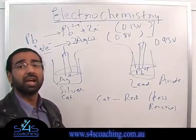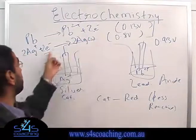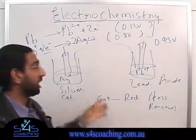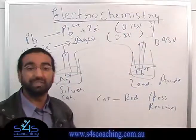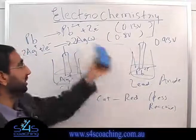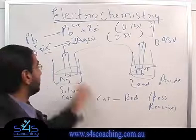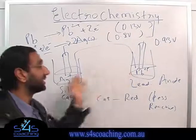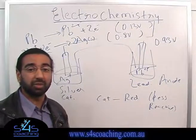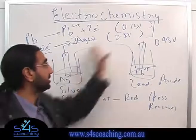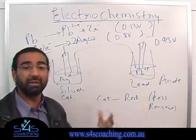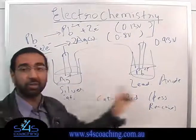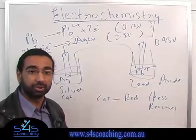A few things to remember: the half equations need to be balanced in the number of electrons. If you double a half-equation, the voltage number still remains the same. The salt bridge must be one that does not form a precipitate, because if it does, the cell will stop working. And the last thing to keep in mind is that this cell is actually an equilibrium reaction, so Le Chatelier's principle applies. If I change one thing on one side, it will affect the voltage.